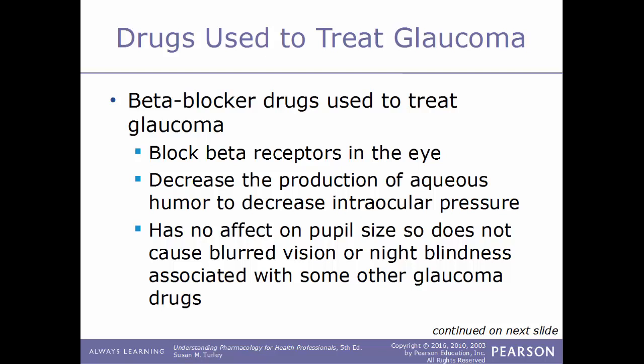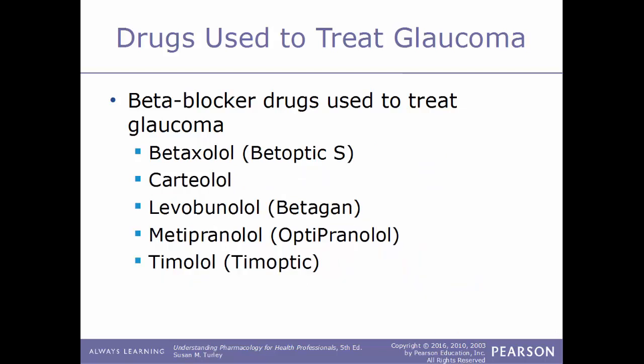Examples of beta blocker drugs for glaucoma include betaxolol, sold under the name Betoptic-S; carteolol; levobunolol, sold under the name Betagan; metipranolol, sold under the name OptiPranolol; and timolol, sold under the name Timoptic.